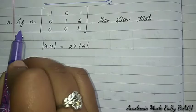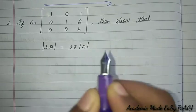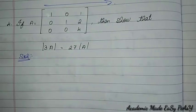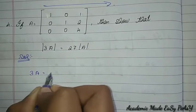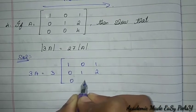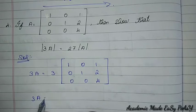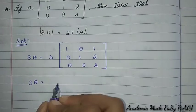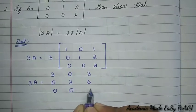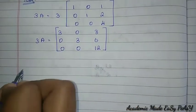Question 4: given matrix A = [1,0,1; 0,1,2; 0,0,4], show that det(3A) = 27 · det(A). Like the previous question, we first find 3A by multiplying every element by 3: 3A = [3,0,3; 0,3,6; 0,0,12].